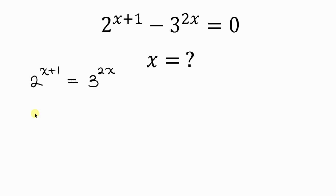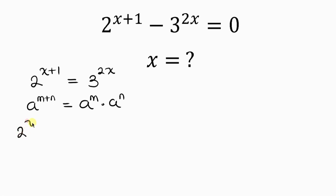Our next step will be to apply the law of indices that says a to the m plus n is the same as a to the m times a to the n. Applying this to the left hand side, the expression can be written as 2 to the x times 2 to the 1, equal to 3 to the 2x on the right.